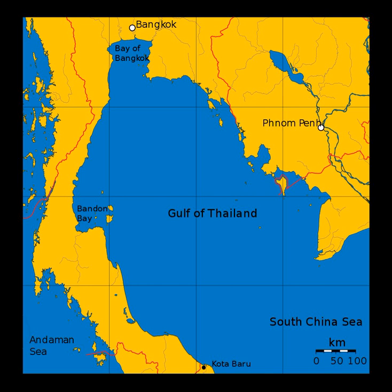The Gulf is around 800 km long and up to 560 km wide, has a surface area of 320,000 km², and is surrounded on the north, west and southwest by Thailand, on the northeast by Cambodia and Vietnam. The South China Sea is to the southeast.